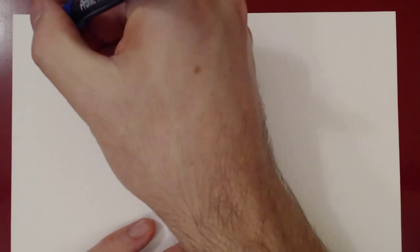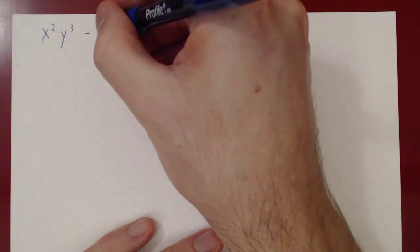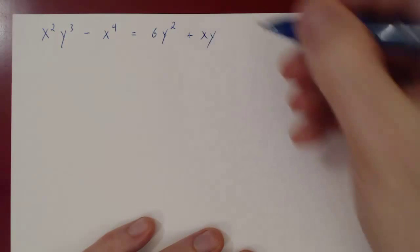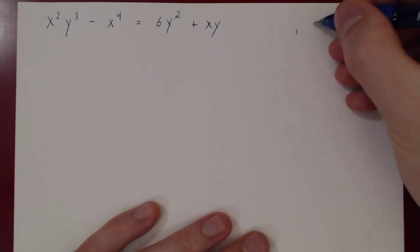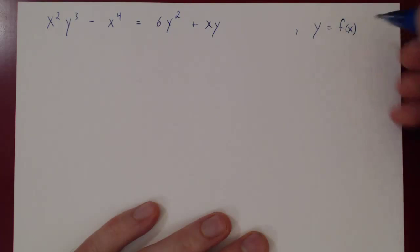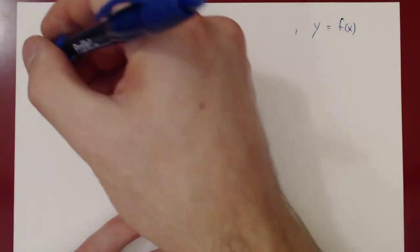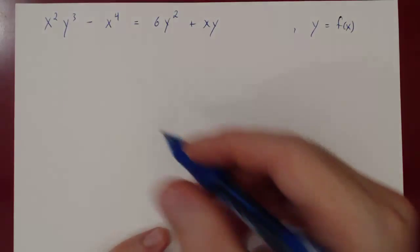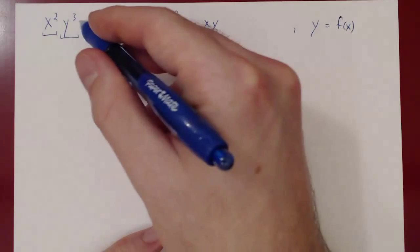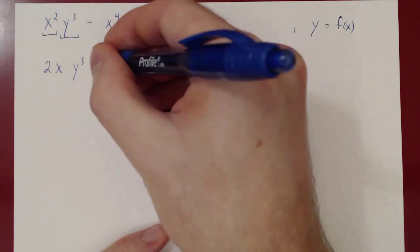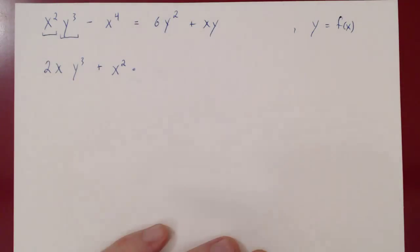Let's do one more example. Suppose we have the curve x squared y cubed minus x to the fourth power equals 6y squared plus xy. We again think of y as a function of x, so both sides are equal as functions of x and have the same derivative. Differentiating the left-hand side: we have a product, x squared times y cubed, so we apply the product rule. The derivative of the first term is 2x, times the second term y cubed.